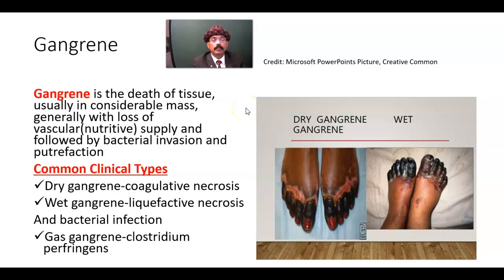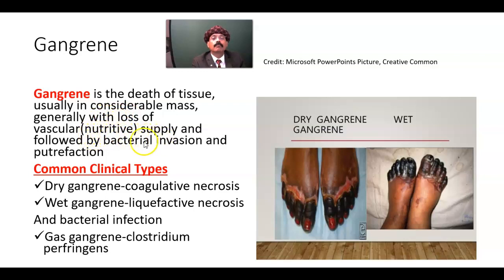What is gangrene? Gangrene is a type of necrosis with superadded putrefaction. It is the death of tissue, usually in considerable mass, generally with loss of vascular nutritive supply, followed by bacterial invasion and putrefaction.